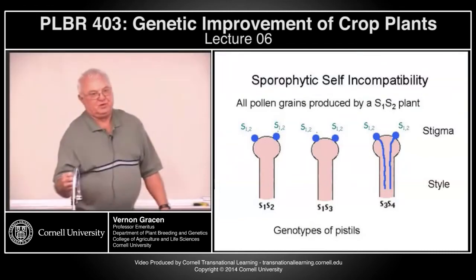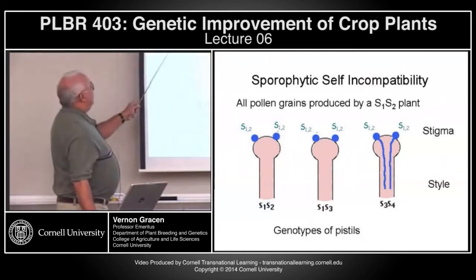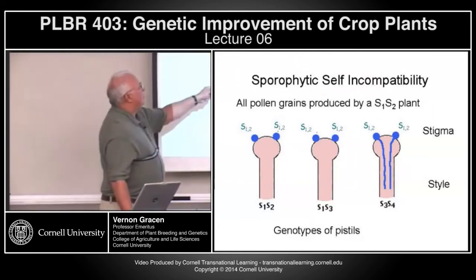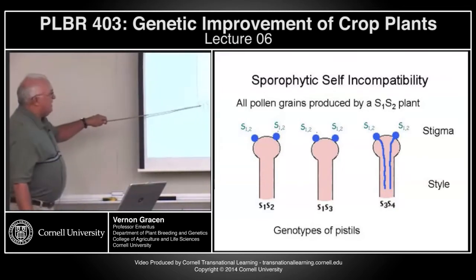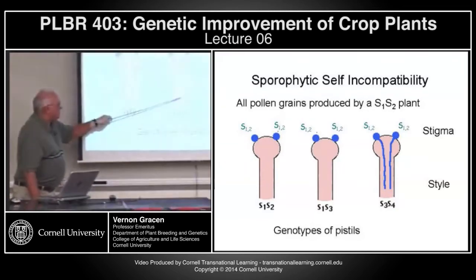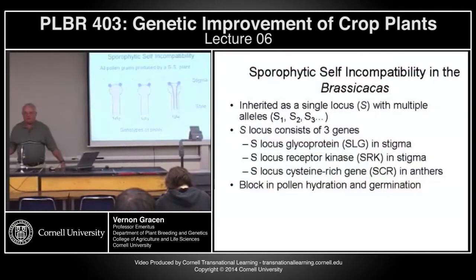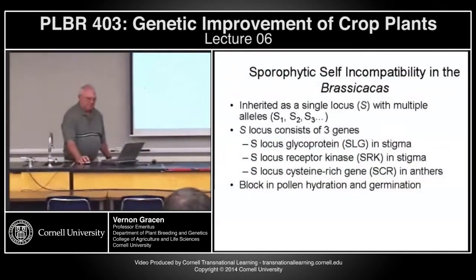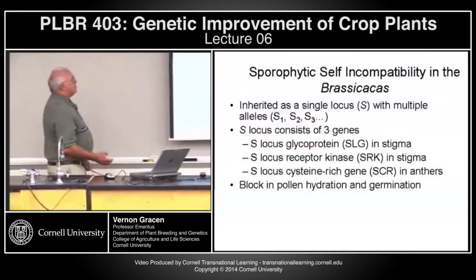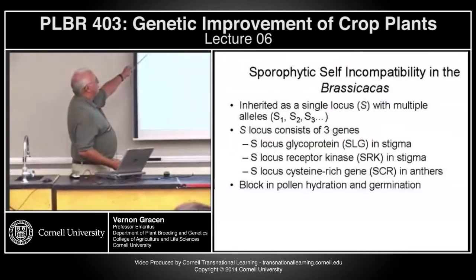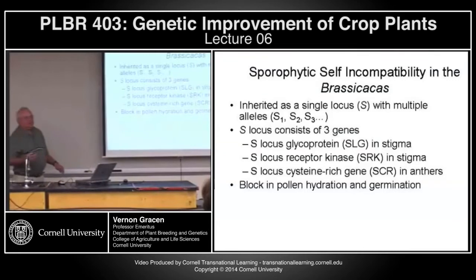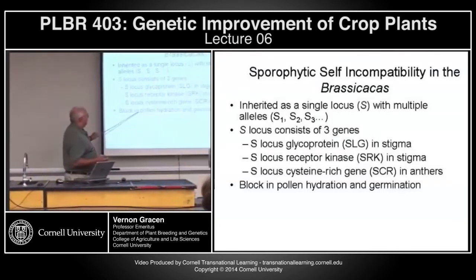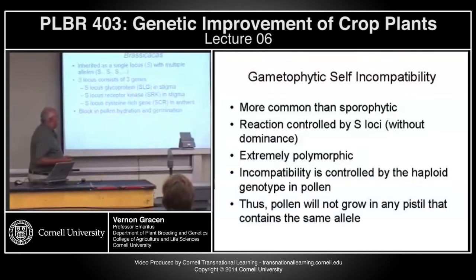In the sporophytic system, if either of the two alleles present in pollen is also present in the style, no pollination occurs. This is important in the brassicas. It's inherited as a single locus with multiple alleles, though that locus is actually complex, comprised of three genes. The mechanism blocks pollen hydration and germination.